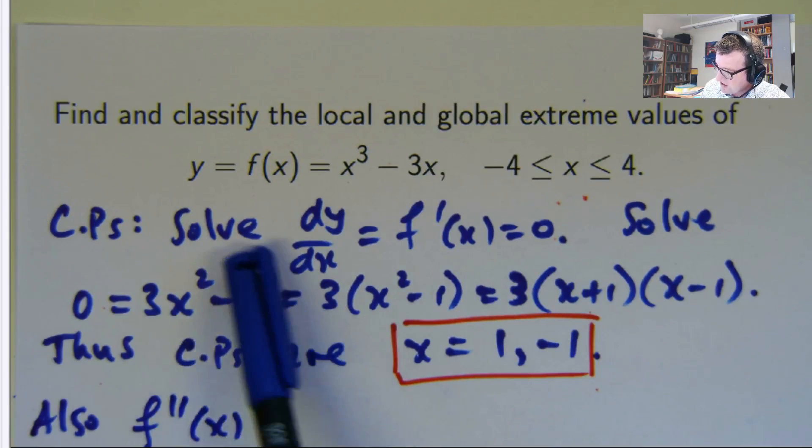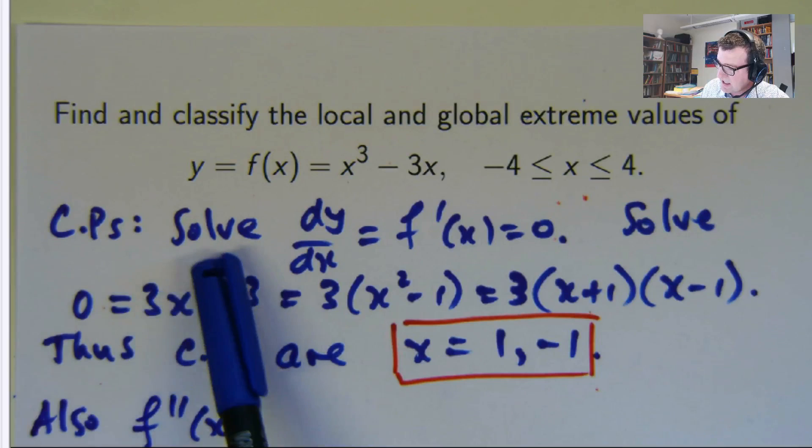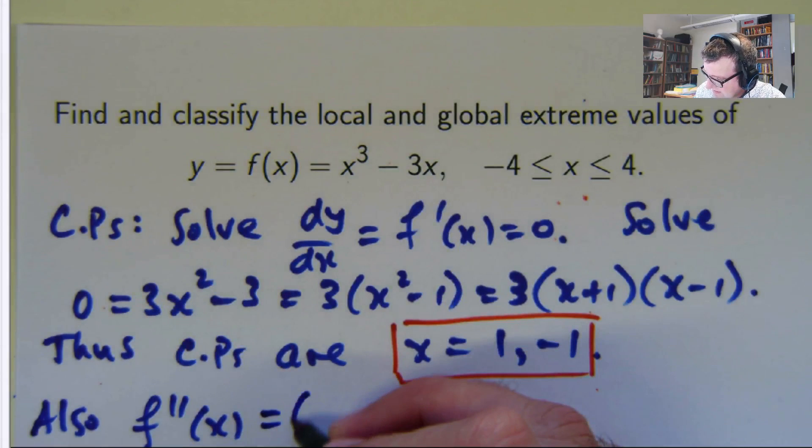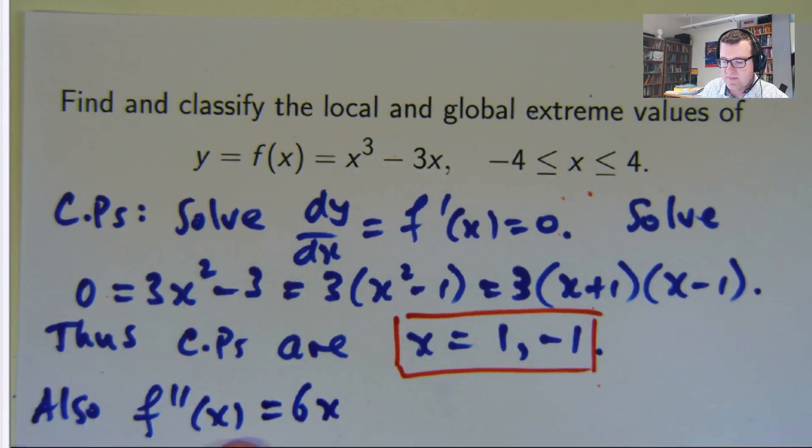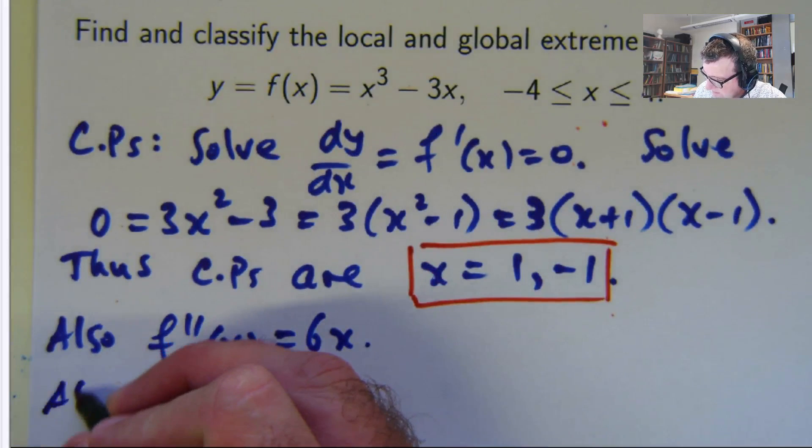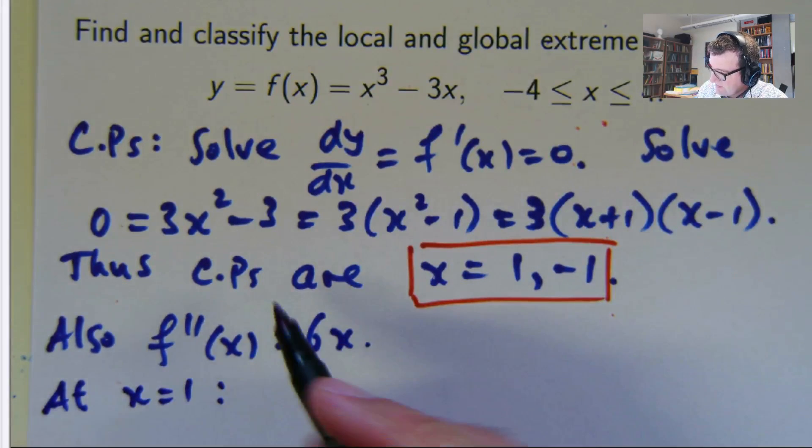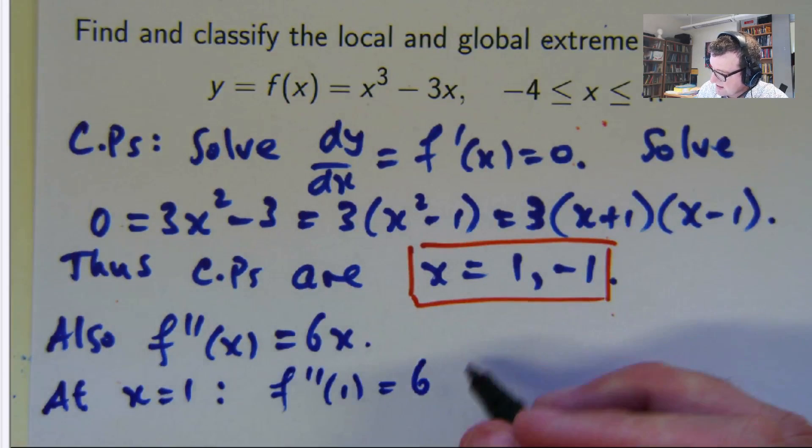If that's my first derivative, let's differentiate. The 2 is going to come to the front, you're going to get 6x. So this will change depending on what x is. So, at x equals 1, that's 6, so that's positive.